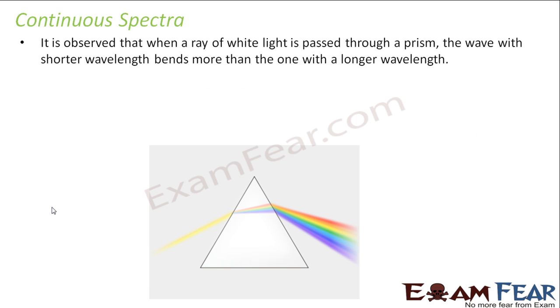If you see the continuous spectra, the white light is continuous. If you pass this through a prism, you will see a VIBGYOR thing. It is all continuous, right? That is nothing but a continuous spectra. But in the spectra which we get when we excite a hydrogen atom or any other atom, that is not continuous.